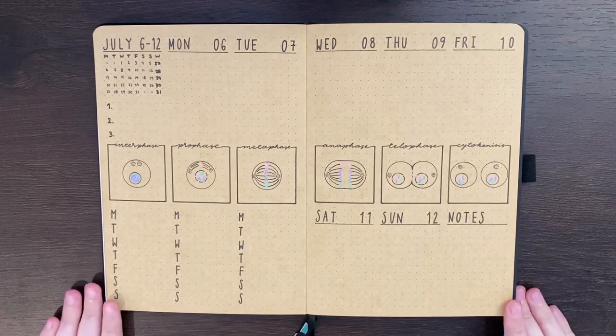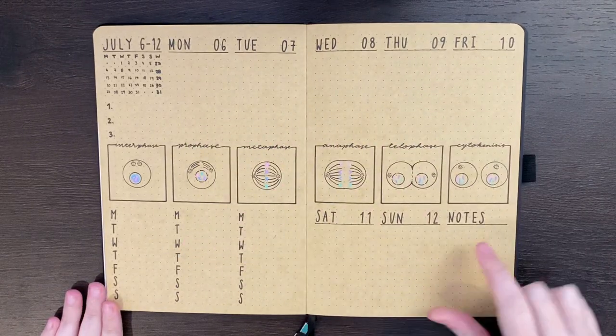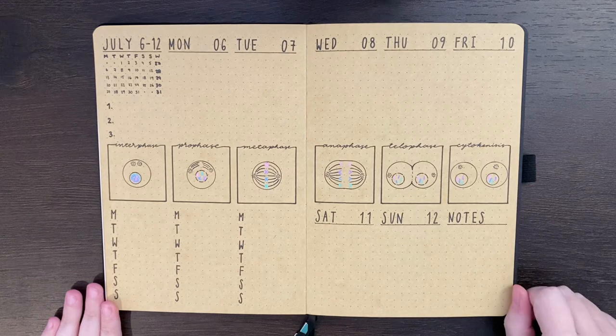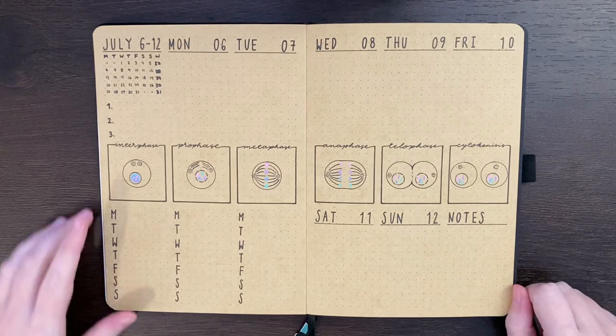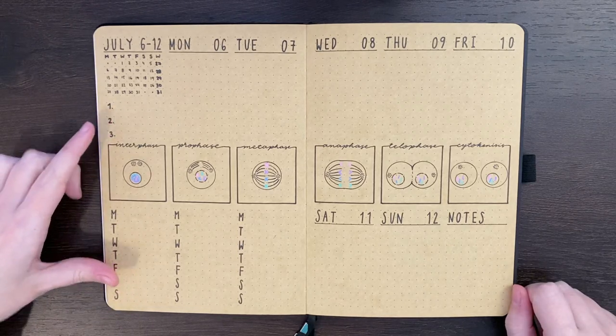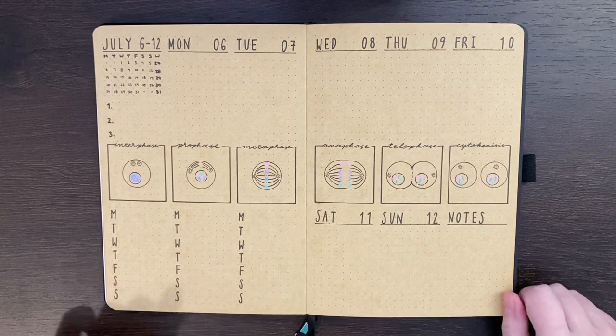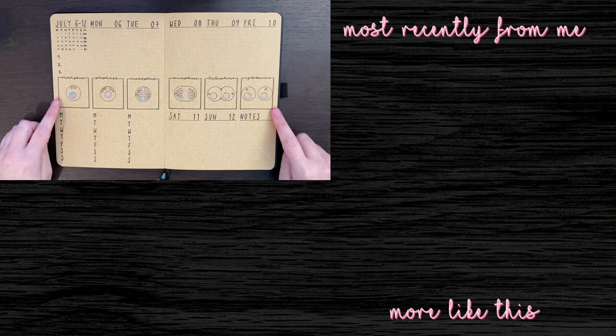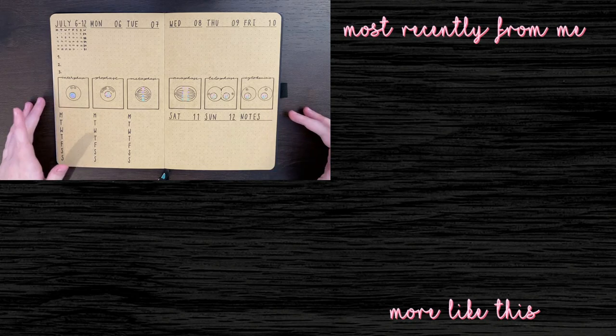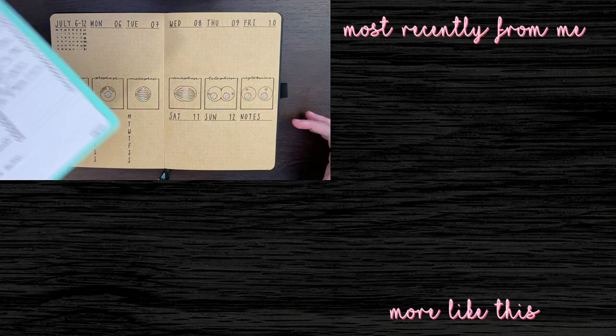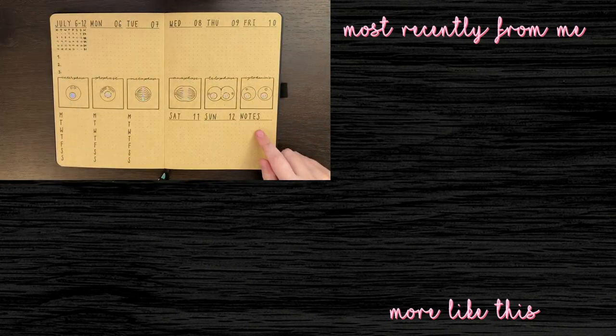All right, so we have a space for each day of the week, a section for notes, hopefully I use it this time, a space for my top three tasks for the week, and a place to record my breakfast, lunch, and dinner. I'm pretty pleased with how this one turned out, especially my little cell division doodles. And now I'm going to jump off camera and transfer everything from my brain dump into here.